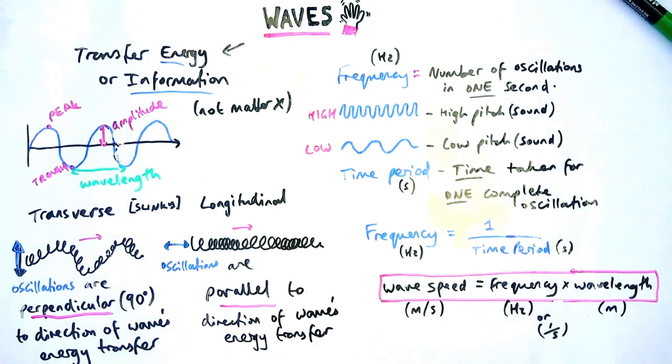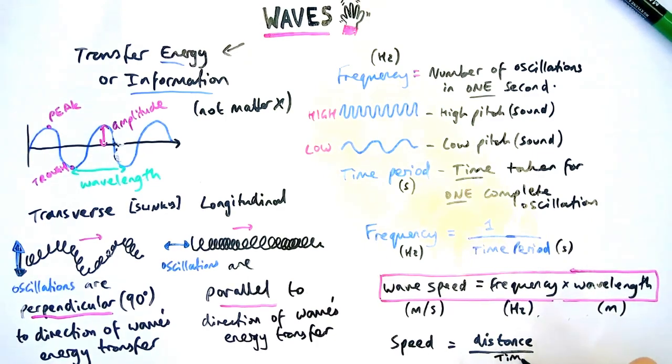If you didn't know, frequency is technically per second, so that's where that unit comes from. Speed can also be measured for a wave if you know the distance and the time taken for the wave to travel from one place to another. Same as you would do with any other object like a car or a person or something like that.